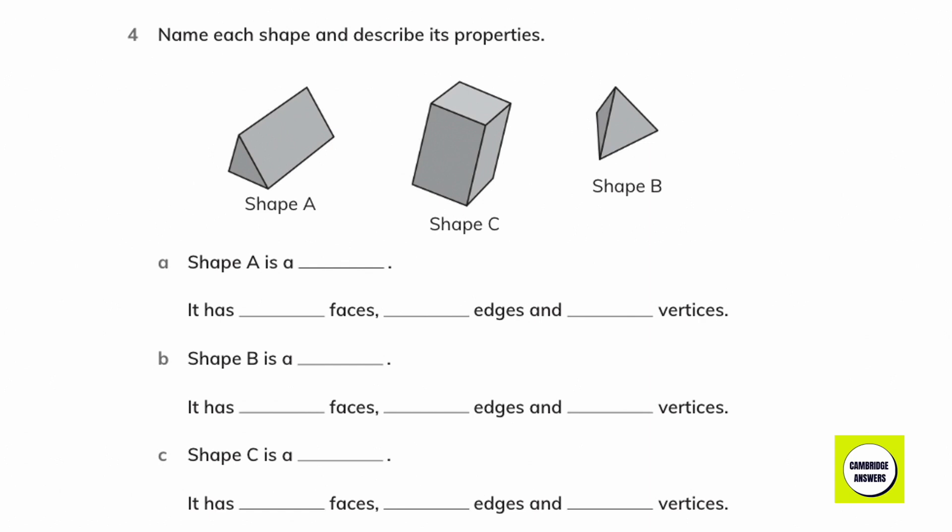Name each shape and describe its properties. Shape A is a triangular prism. It has 5 faces, 9 edges, and 6 vertices. Shape B is a triangle-based pyramid. It has 4 faces, 6 edges, and 4 vertices.